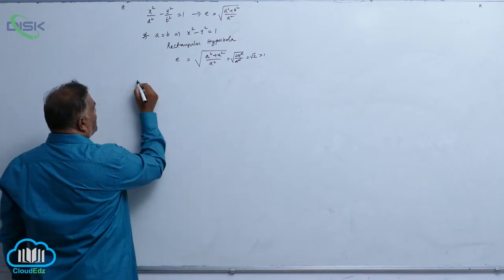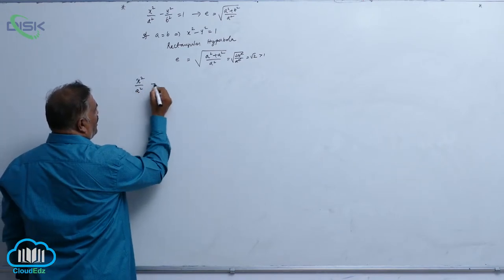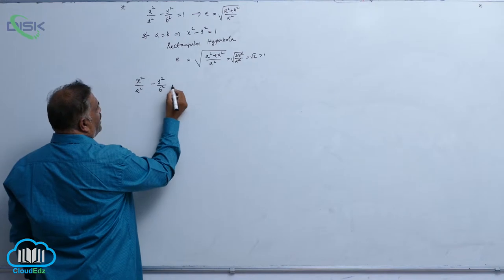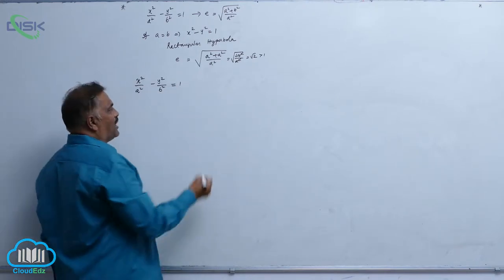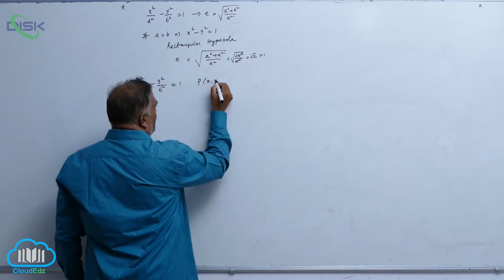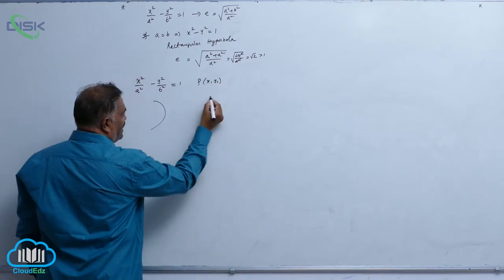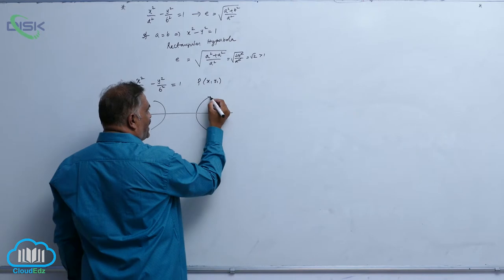Coming to standard equation of hyperbola, x square by a square minus y square by b square equal to 1, P(x1, y1), let us take hyperbola like this, let us find out equation of tangent.